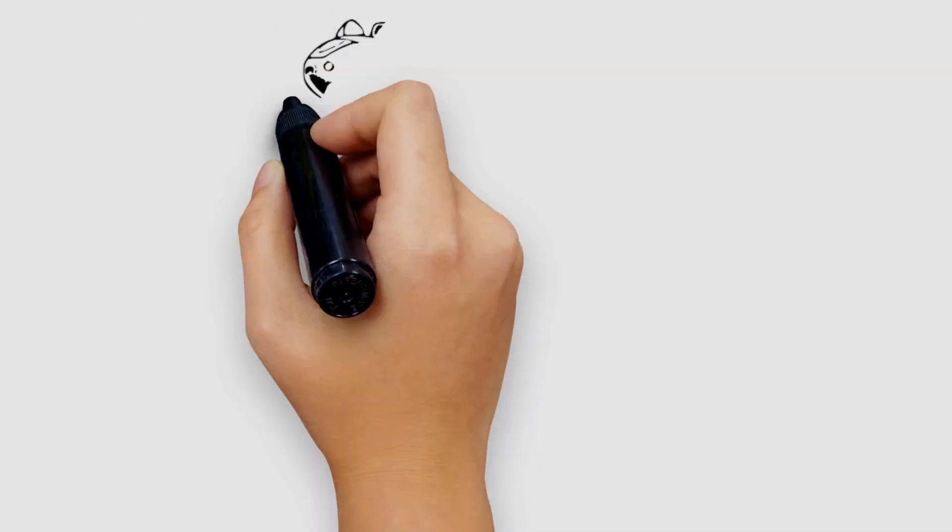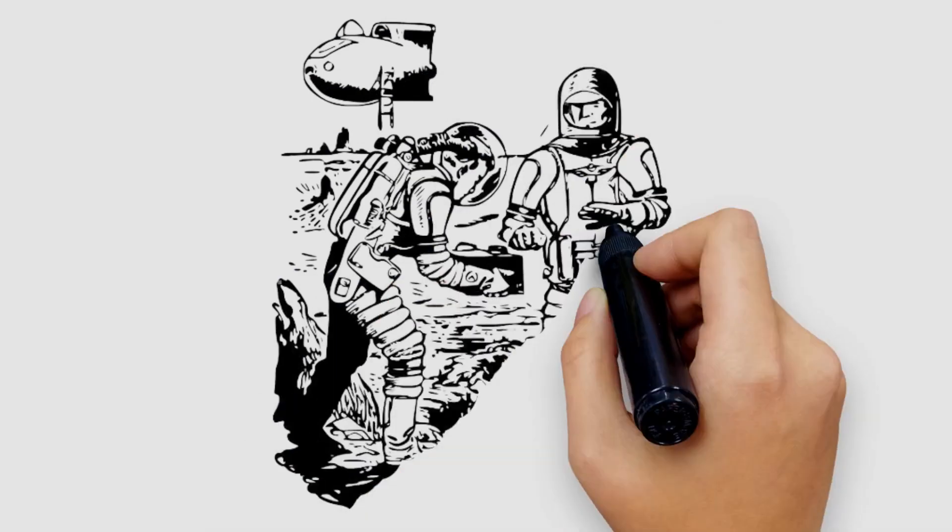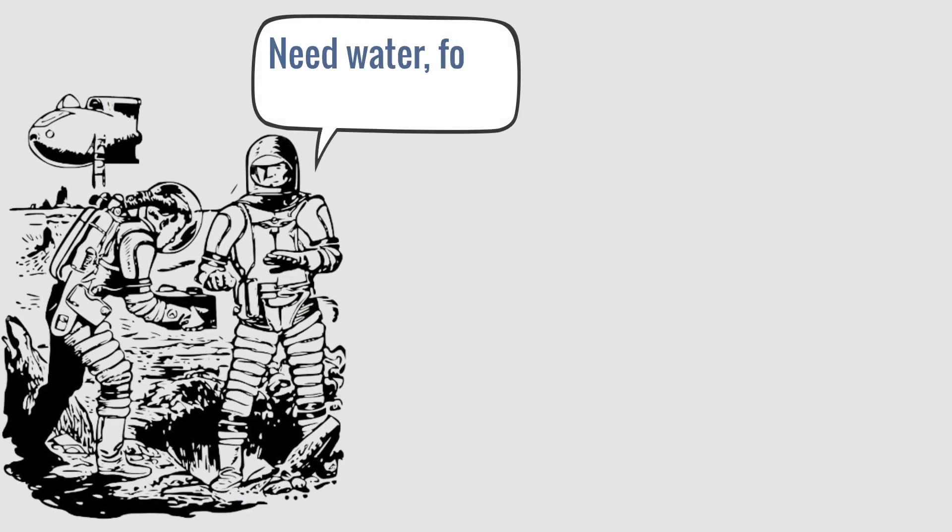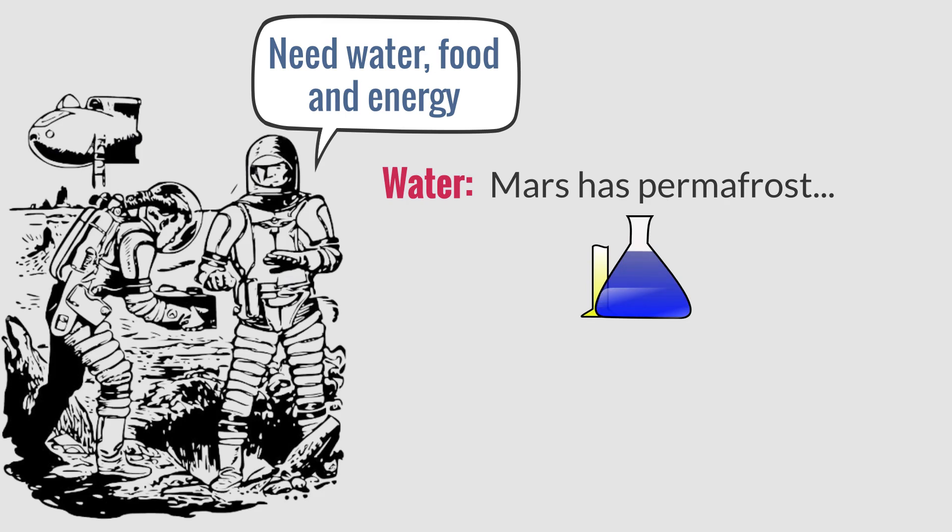In addition to dust storms, radiation, super cold temperatures and toxic atmosphere, humans want to live on Mars. We need water, food, and energy. Fortunately, Mars has permafrost to provide an abundant amount of water, but it is not clear if this water is toxic or not. Regarding food, scientists say potatoes can live and grow on Mars. It will provide a necessary food source.